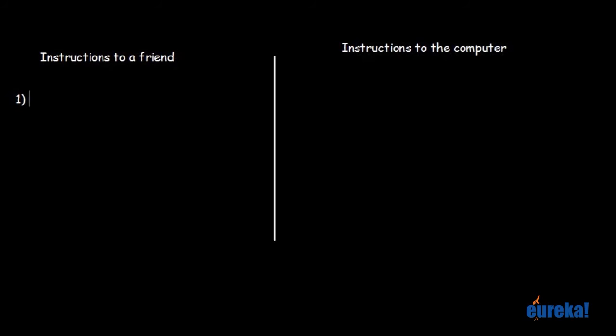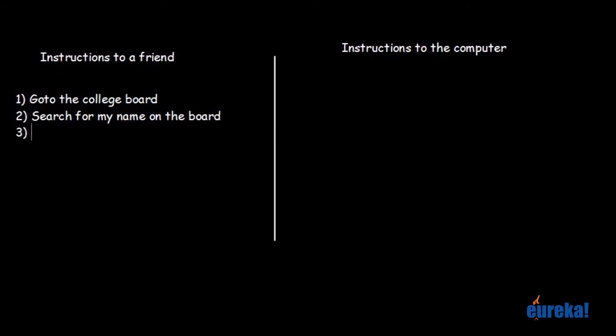Let's first start with the instructions to a friend. The first thing you tell him is: go to the college board. The second step: search for my name on the board. And finally: check the rank against my name. That's it, the task is done. These are the instructions you would give to a friend — you don't have to explain anything more than this.